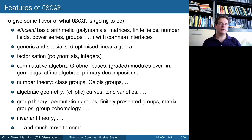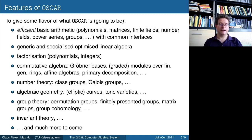We have implementations of both generic and specialized optimized linear algebra for all these basic structures, which are foundational for everything else we do. We have state-of-the-art implementations of factorization algorithms for polynomial systems, algorithms in commutative algebra, and in number theory — for example we can compute class groups and Galois groups and many other things. In algebraic geometry we support working with elliptic curves and toric varieties, and there's also group theory, invariant theory, and much more already there and to come.